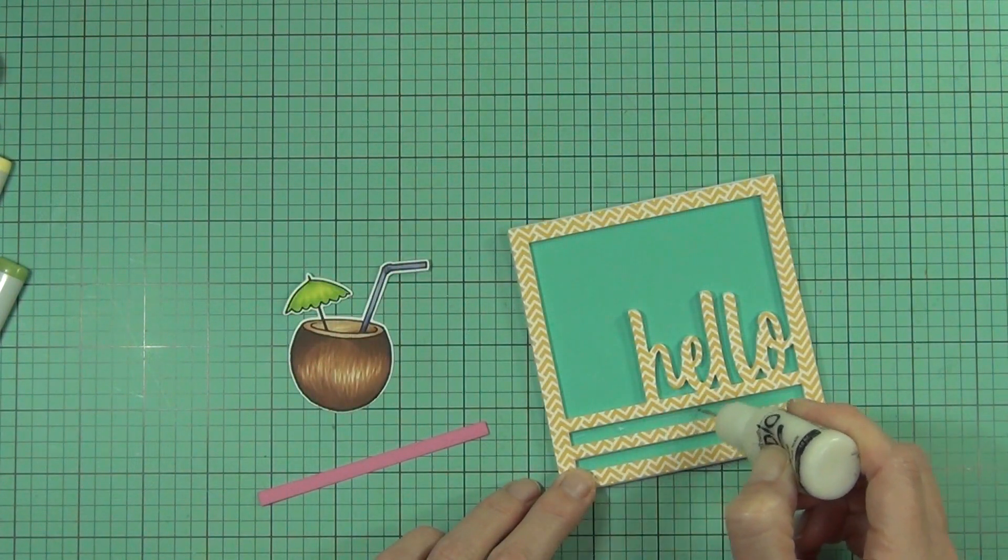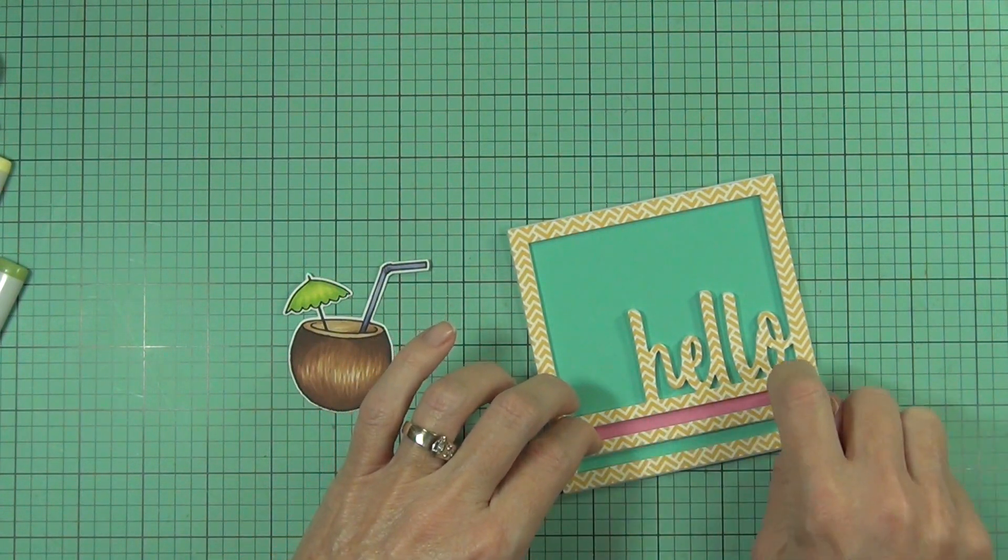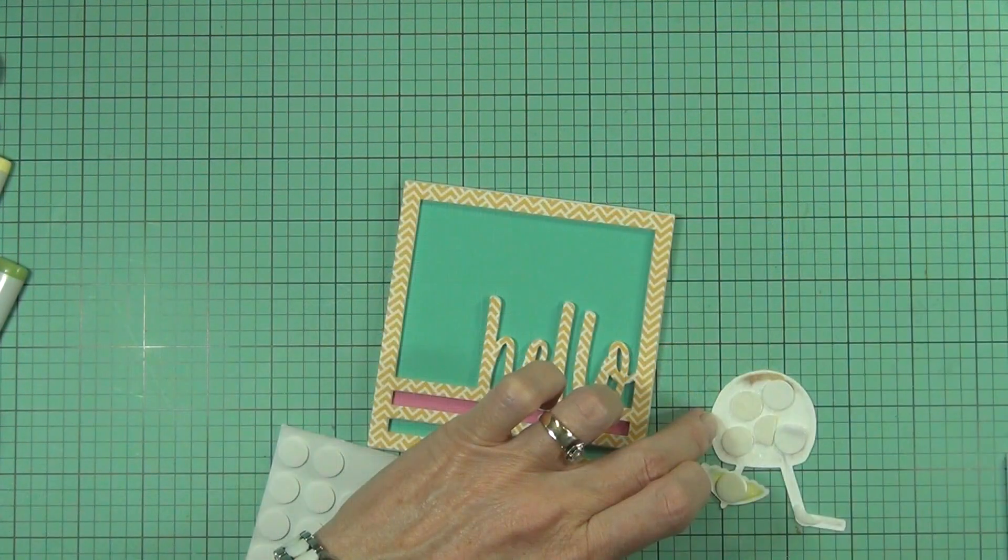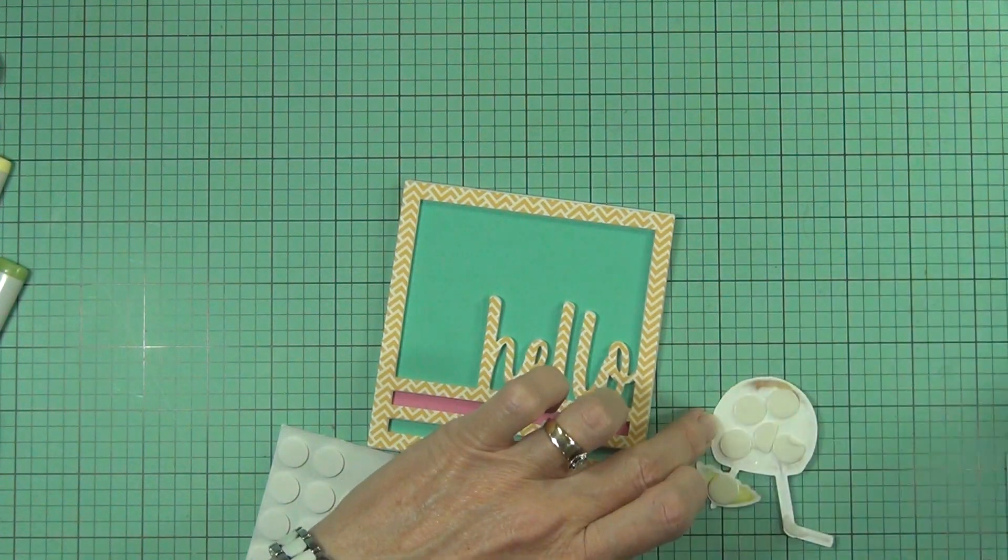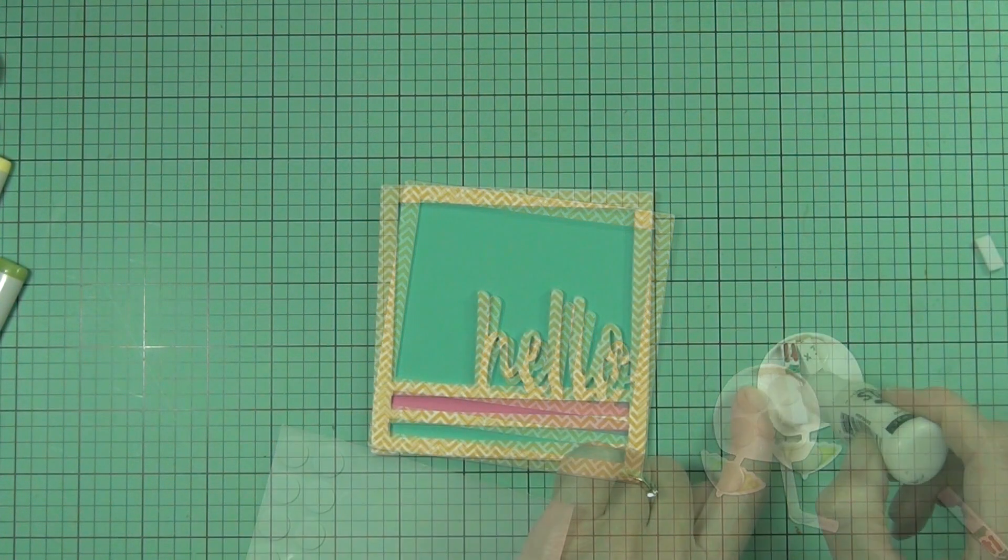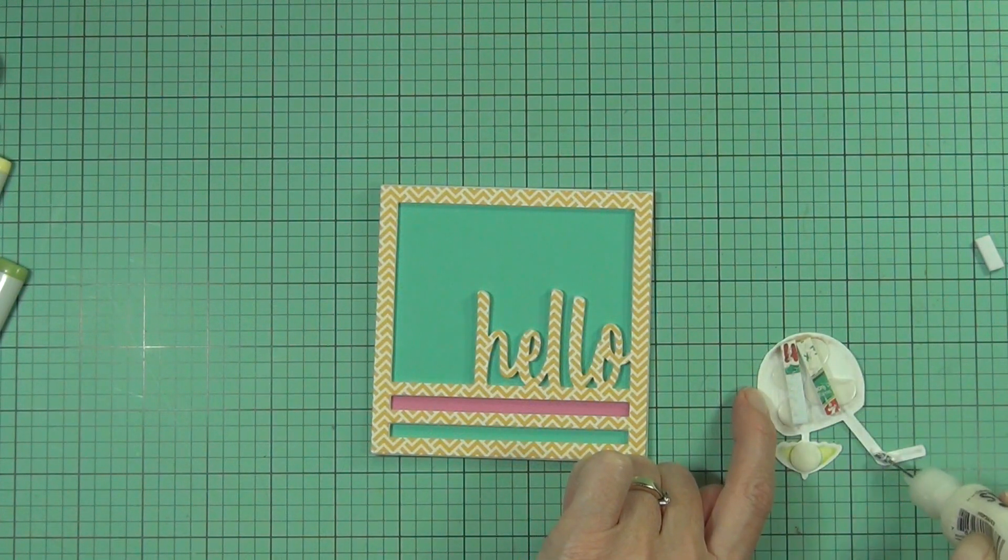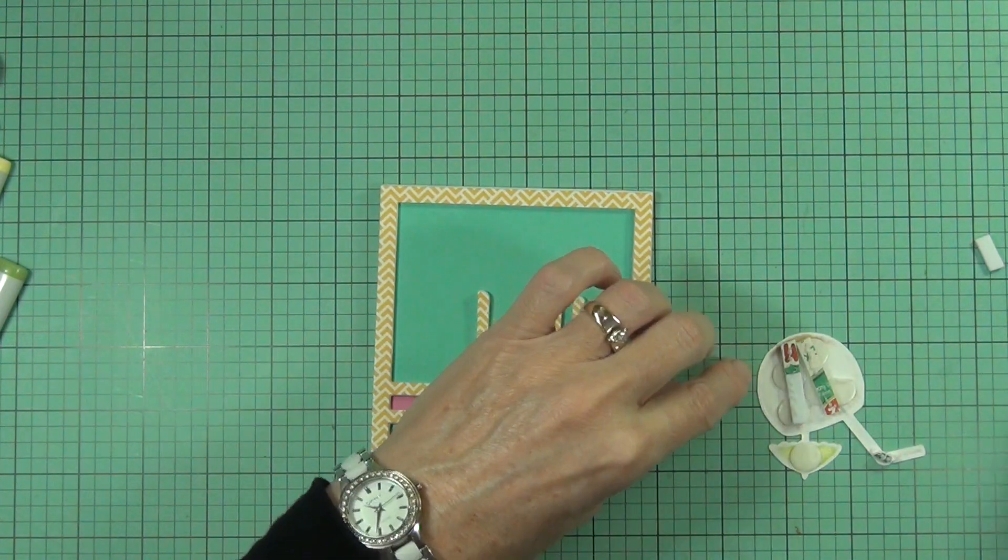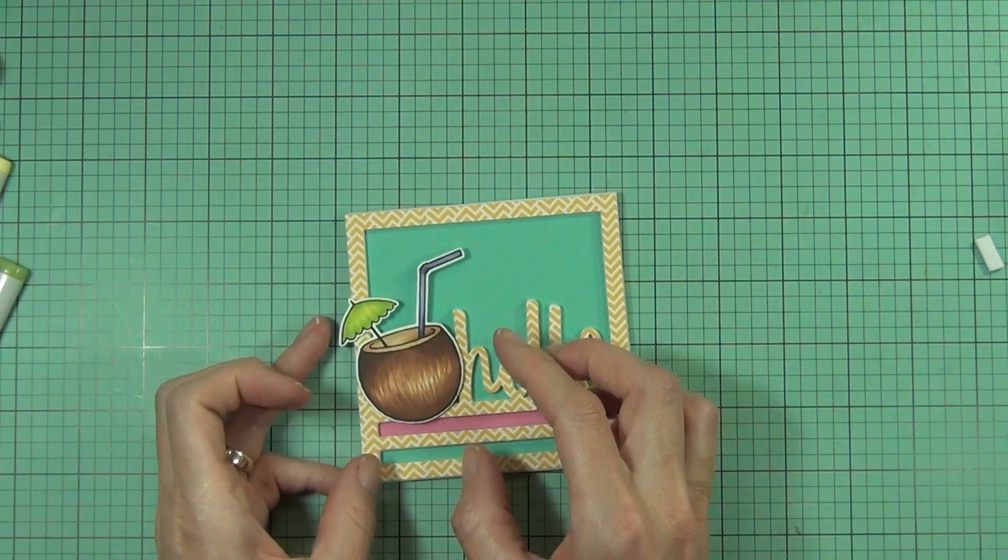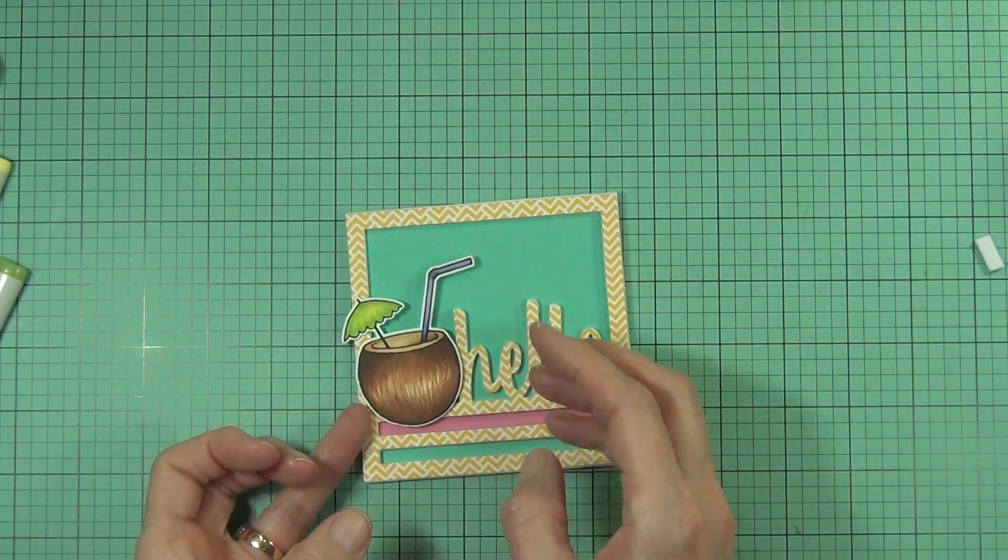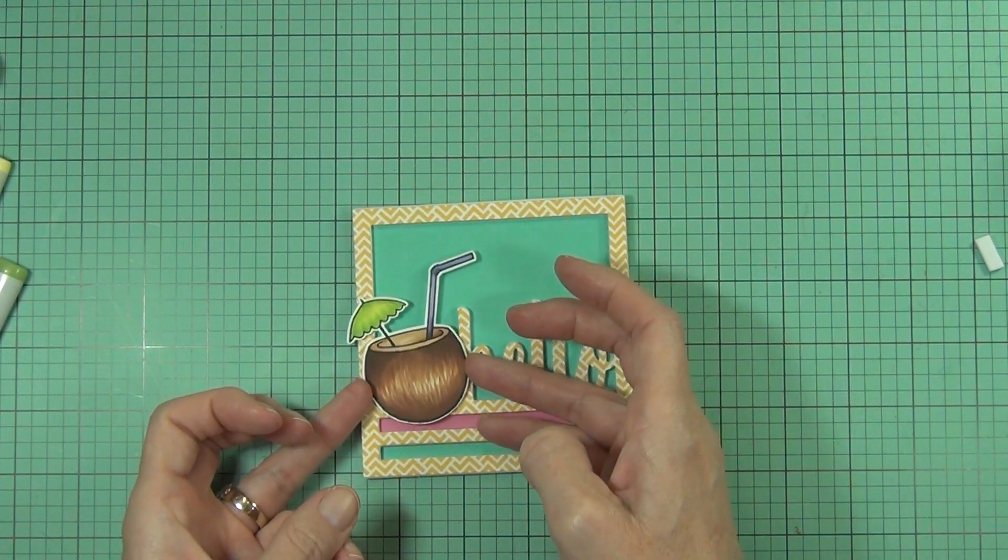I've die cut one of the little strips with some hot pink cardstock, just some scrap. Then I'm going to pop up my drink, my pina colada I'm going to call it. I do want it to sit slightly higher than hello, so what I've done here is I've added some foam circles, some adhesive foam circles, and then used some of the same fun foam on top of that. I added some liquid glue to that and then just sort of shift it around till I'm happy with the placement on the front of my card.